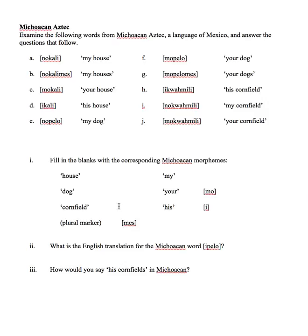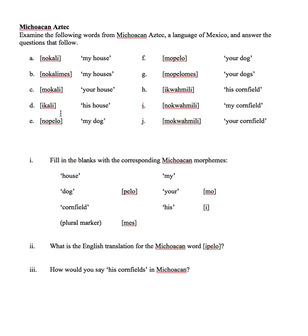The more morphemes you figure out, the easier it is to determine the meanings of the others. Looking at E and F — 'my dog' compared with 'your dog' — we've already determined that 'your' is represented by 'mo' in Michoacan Aztec. Sure enough, 'mo' appears in F, so everything after it must mean 'dog.' Note that 'pelo' may mean 'hair' in Spanish, but in Michoacan Aztec it means 'dog.' Going back to E, we've determined that 'pelo' means 'dog,' so what comes before it — 'no' — must, through a process of elimination, represent the meaning 'my.'